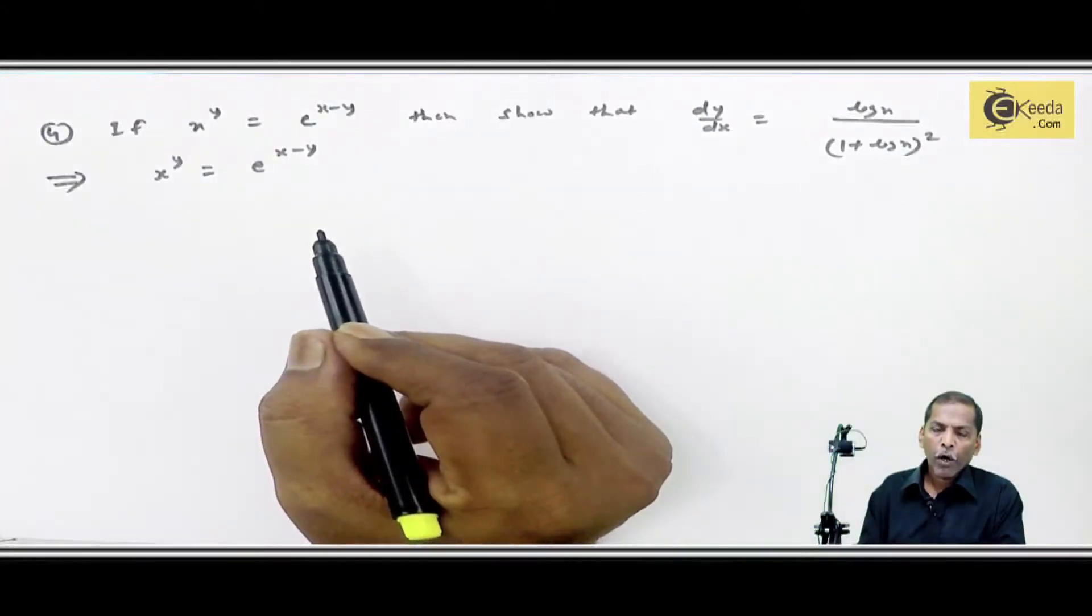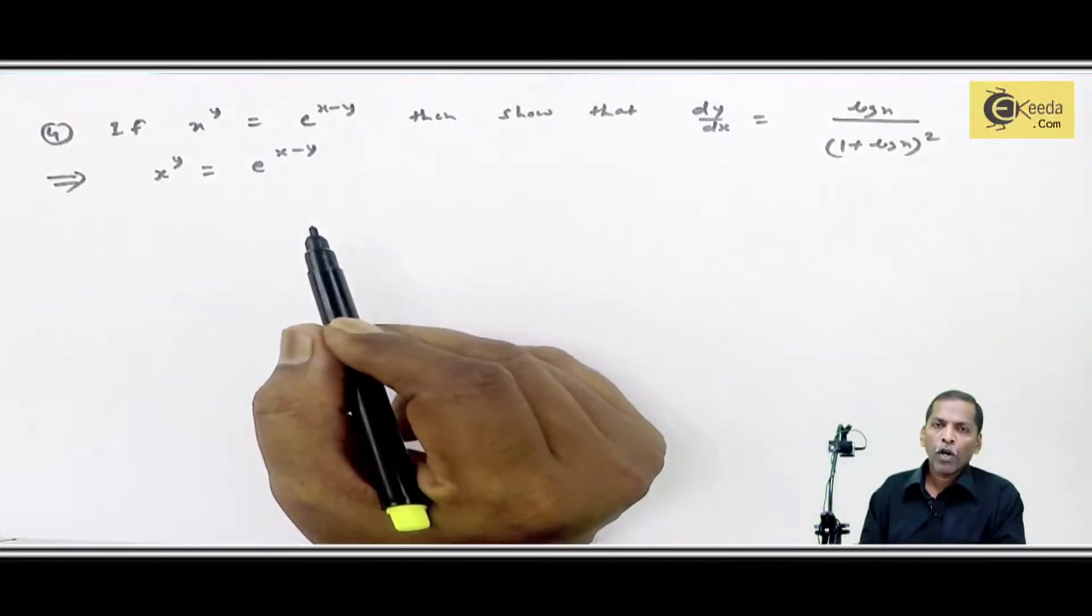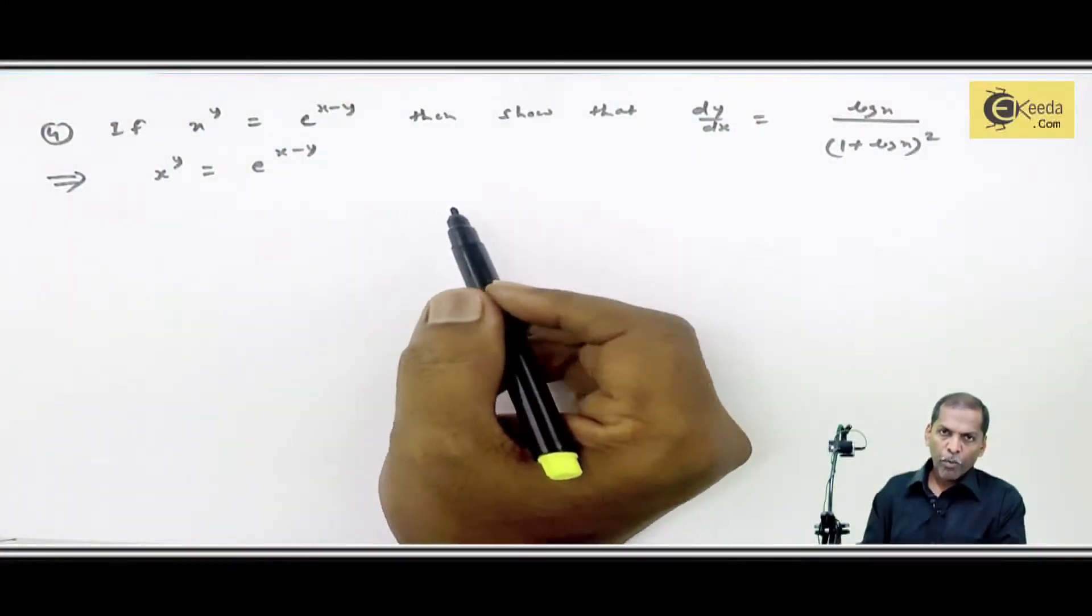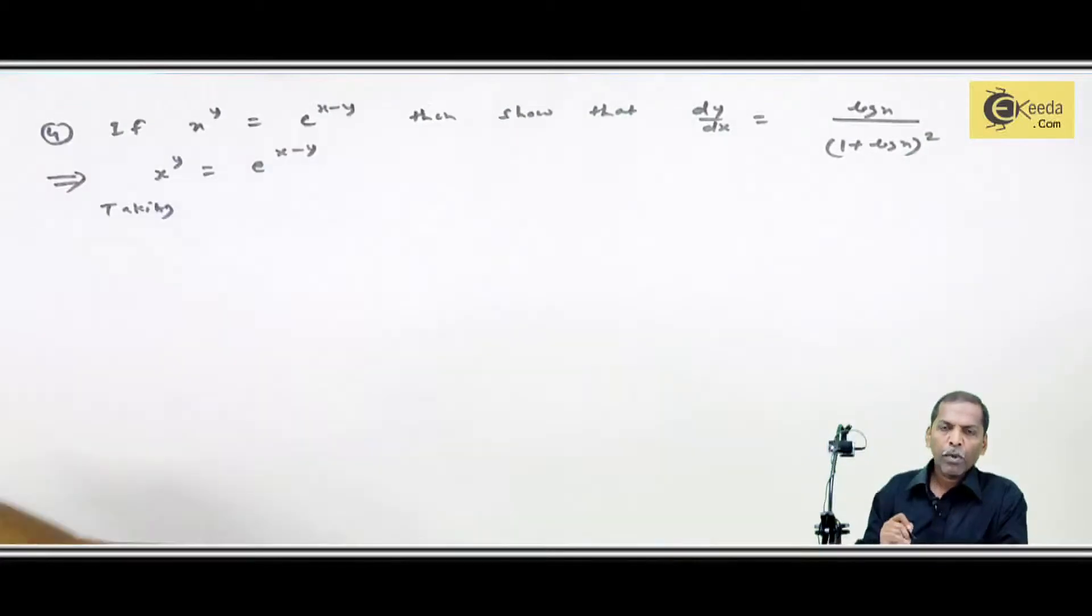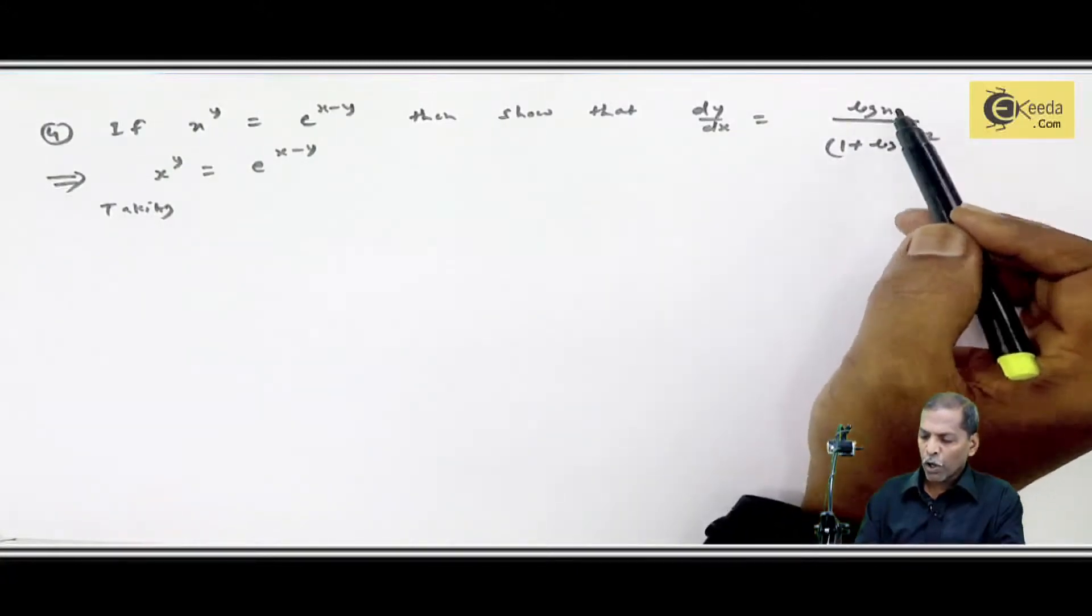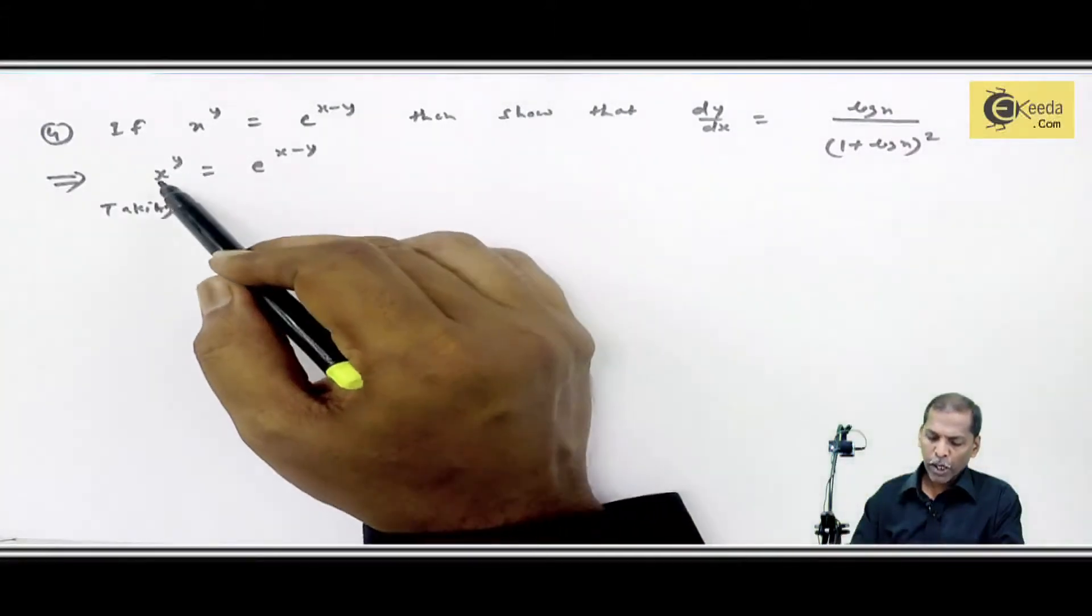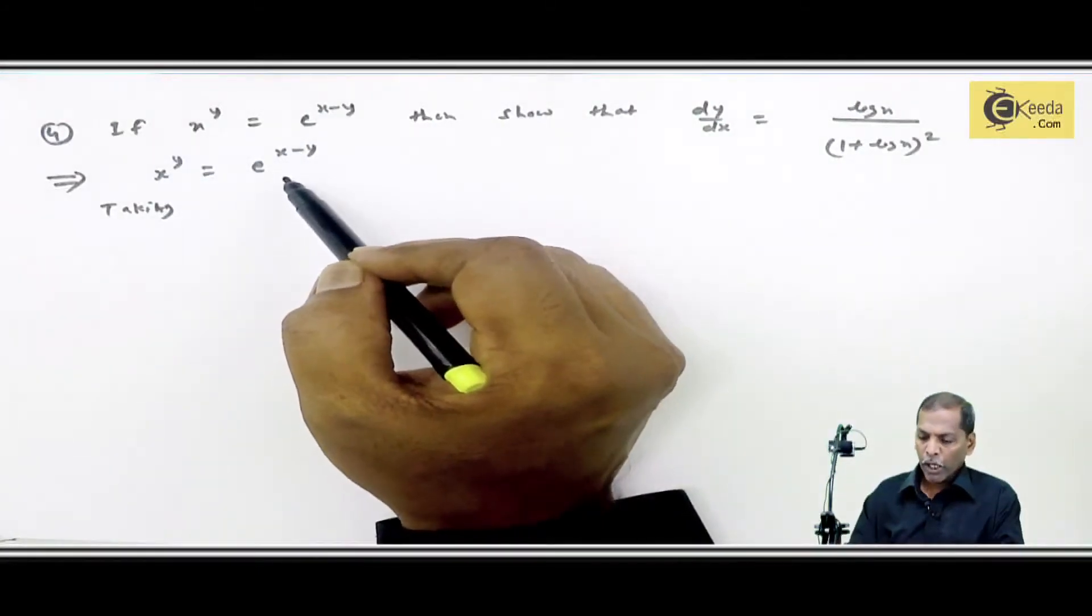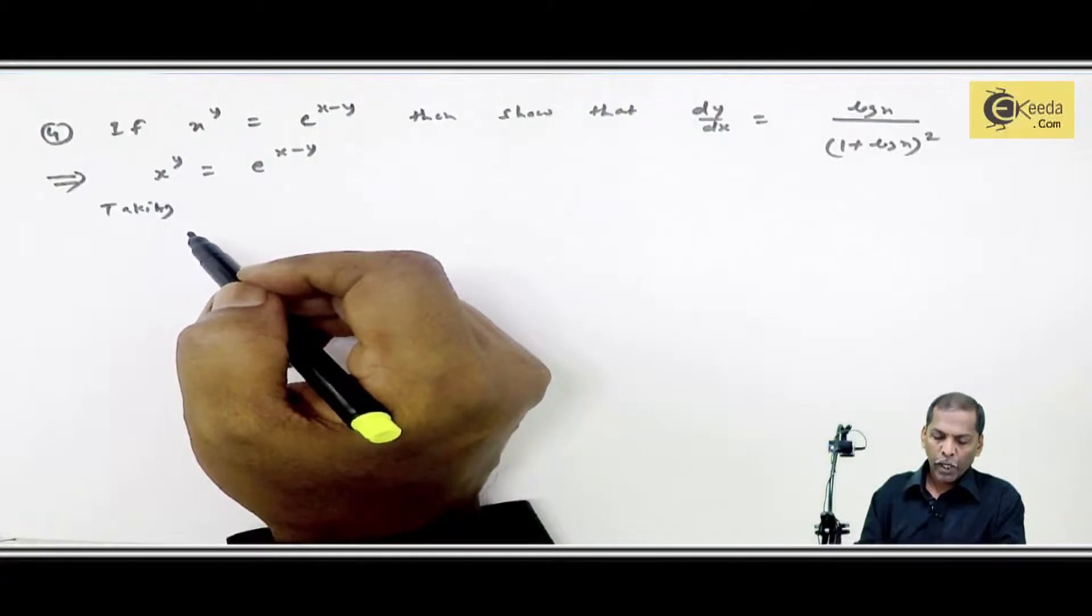Here we apply logarithmic function technique. We use rule according to differentiation of logarithm technique. Here what we have done? Taking log on both sides. And if we observe the answer, dy by dx is equal to log x upon 1 plus log x. If you observe the question, we have not seen log here, but the answer has log. This means that we need to take log here.